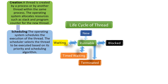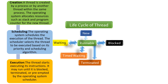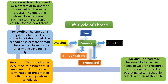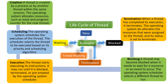In scheduling, the OS schedules the execution of the thread — the scheduler selects the thread to be executed based on its priority and scheduling algorithm. In execution, the thread starts executing its instructions and may run until it is blocked, terminated, or preempted by the OS scheduler. In the blocking stage, the thread may become blocked when it needs to wait for a resource or event, and the OS scheduler selects a different thread to run. Finally, a thread is terminated when it has completed its execution; the OS de-allocates the assigned resources and sets the thread's status to terminated.